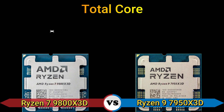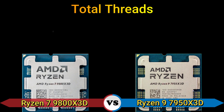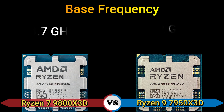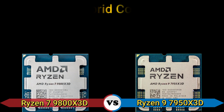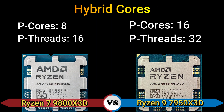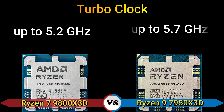Part 2 — CPU. Total cores: 8 and 16. Total threads: 16 and 32. Base frequency: 4.7 GHz and 4.2 GHz. Performance cores: 8 and 16. Performance threads: 16 and 32. Turbo clock: up to 5.2 GHz and up to 5.7 GHz.